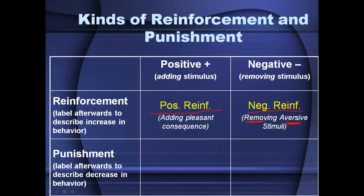Punishment is where people get really confused, so you've got to be careful. Something called positive punishment is not positive because it's nice — it's when you add an aversive stimulus. When someone gets spanked, assuming that's something people don't like, that's going to decrease the behavior. The old stereotype of Catholic school nuns using rulers on students' hands when they engaged in undesirable behavior is another example — they added an aversive stimulus. When you get a dirty look from a girlfriend or boyfriend, that makes you less likely to repeat that behavior.